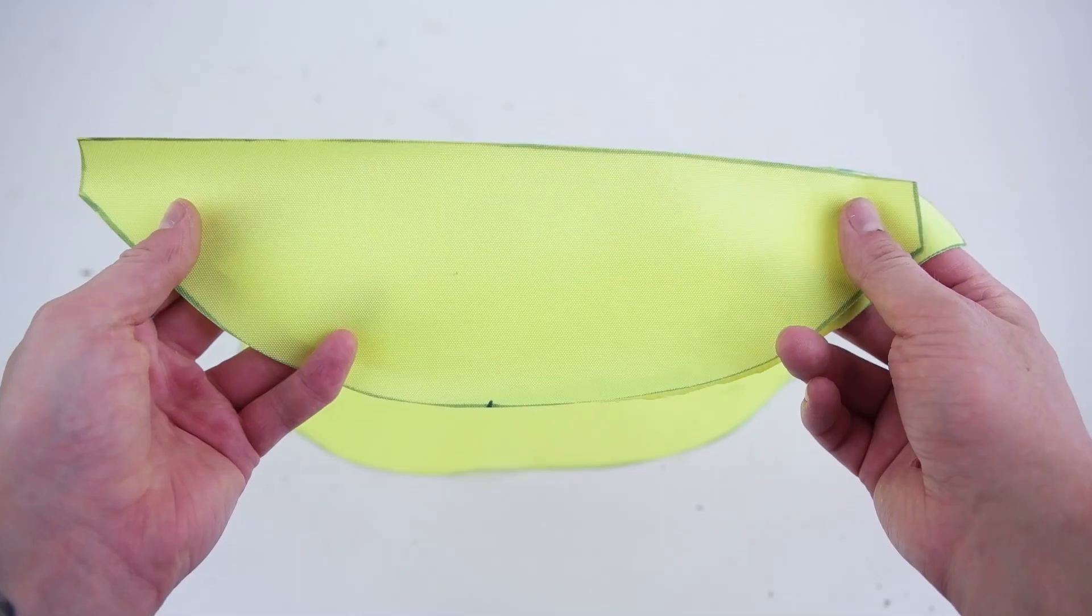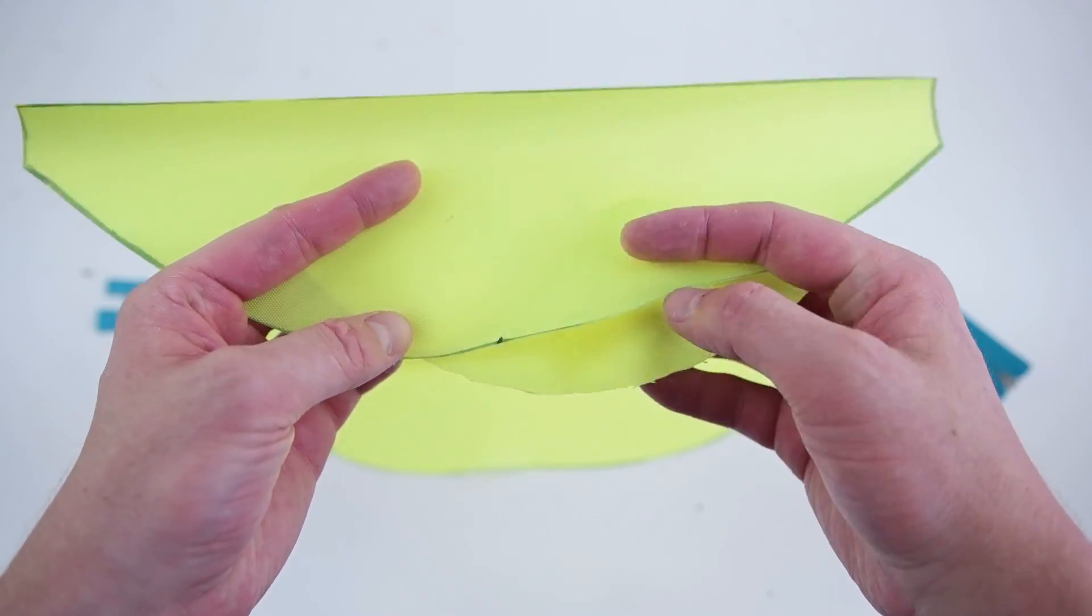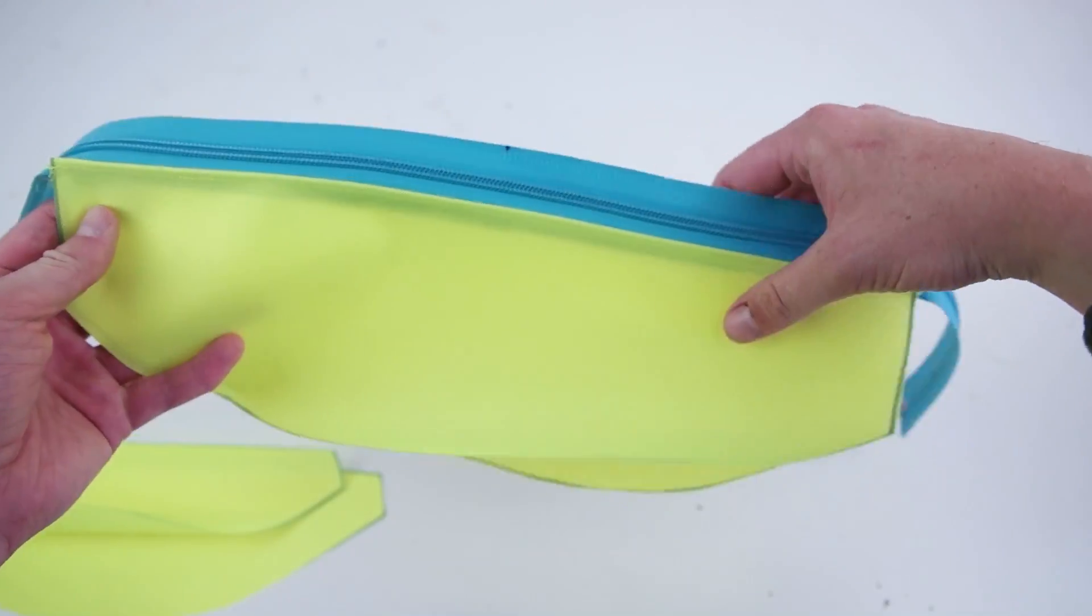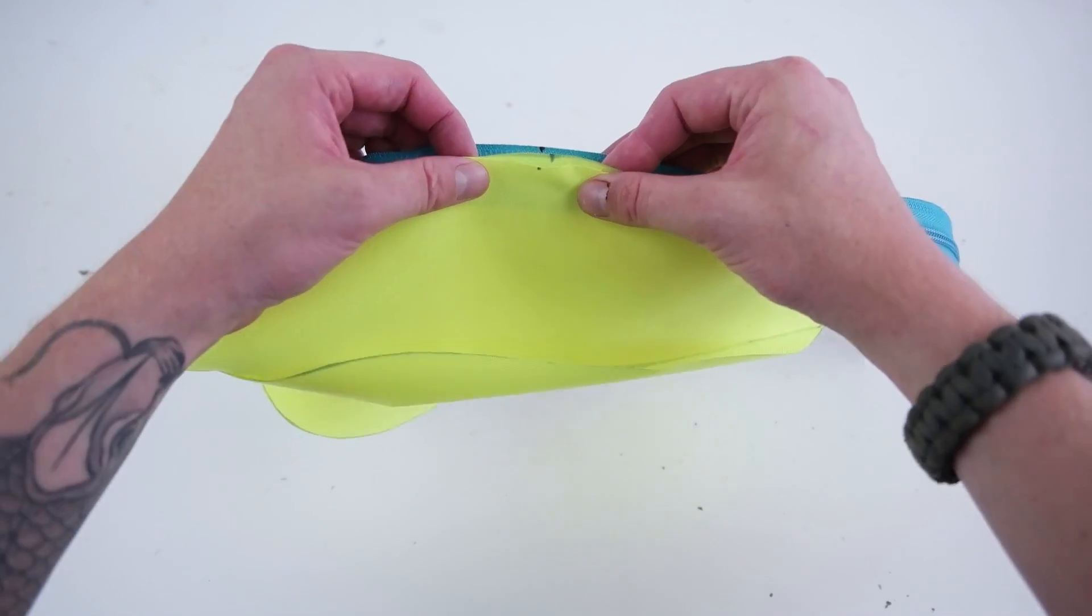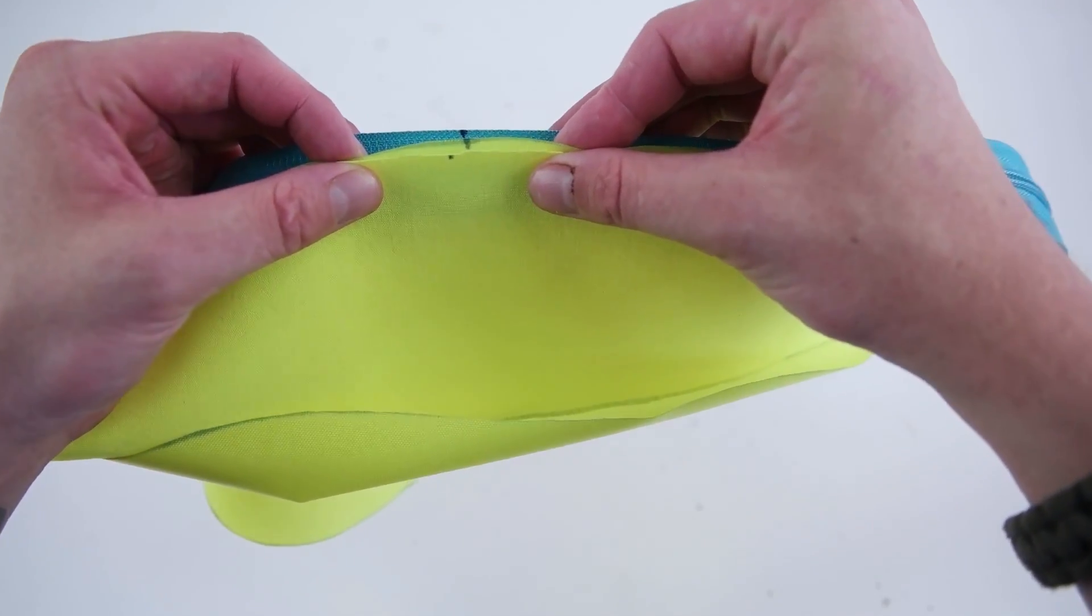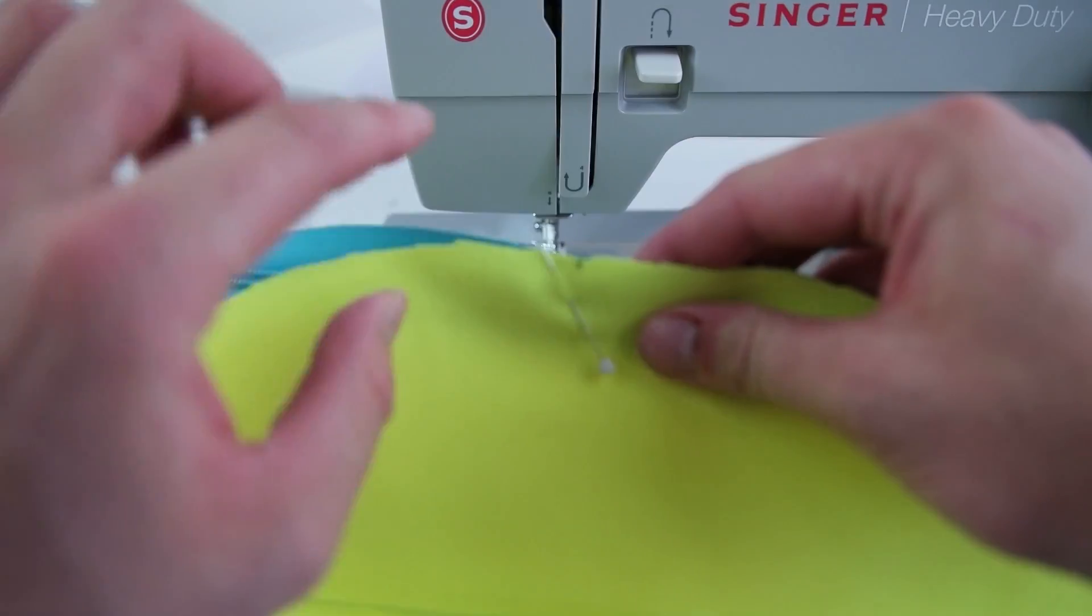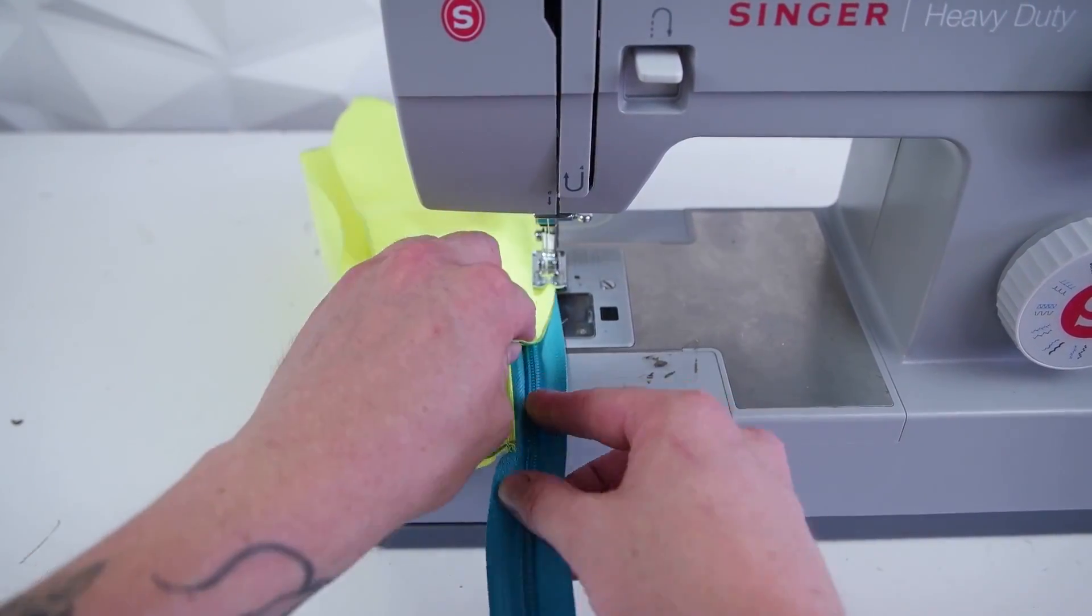Grab your top panels and mark the center of the curve. Also mark the center of the bottom panel, and you're gonna be lining these points up. This will help keep everything centered as you sew it on. Make sure that you put both the lining and the outer layer on the same side of the zipper. I like to start at the center and work towards the outside. It just makes it a little bit easier and keeps that pocket perfectly centered.